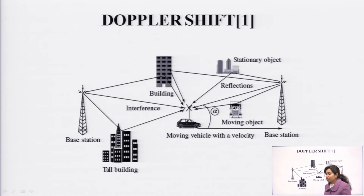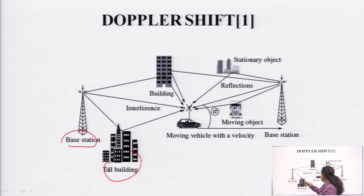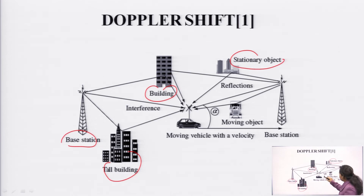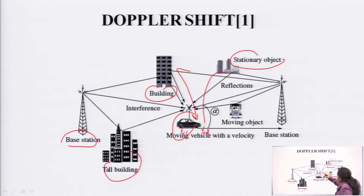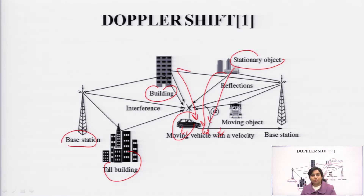Next is Doppler shift. Doppler shift plays an important role when the receiver is moving and a signal has to be received by a moving object. You can see a base station, buildings, a stationary object, and a moving vehicle with some velocity. At time T1 the receiver is at one position; at T2 it is at another point, so the signal angle changes; at T3 the receiver is at yet another position. That is known as Doppler shift, which plays an important role when the receiver is moving.